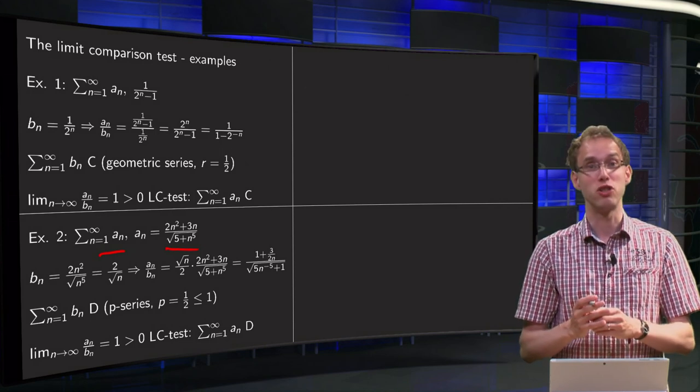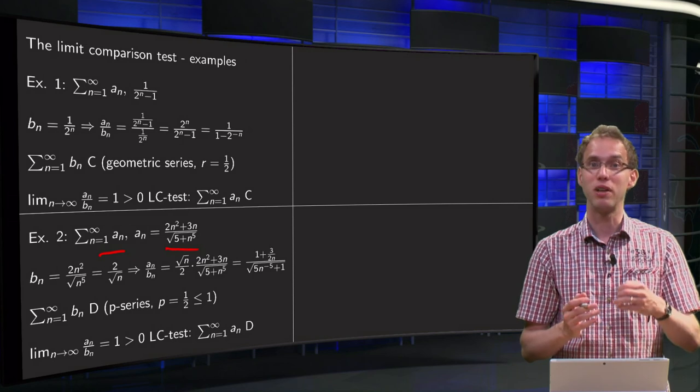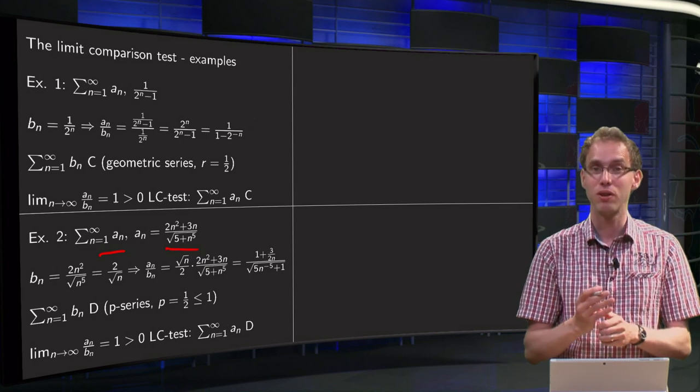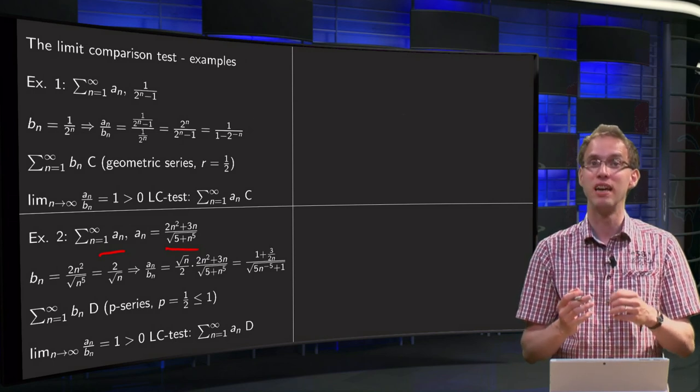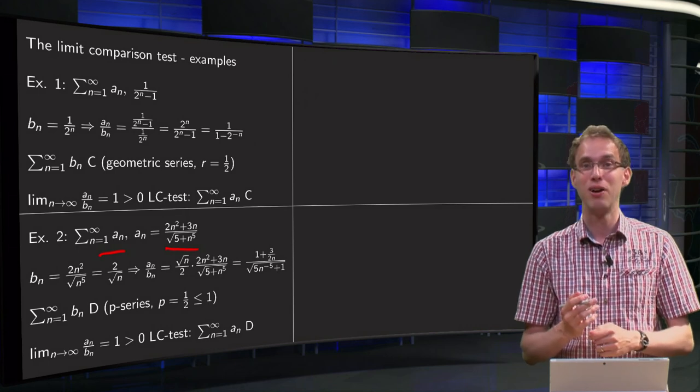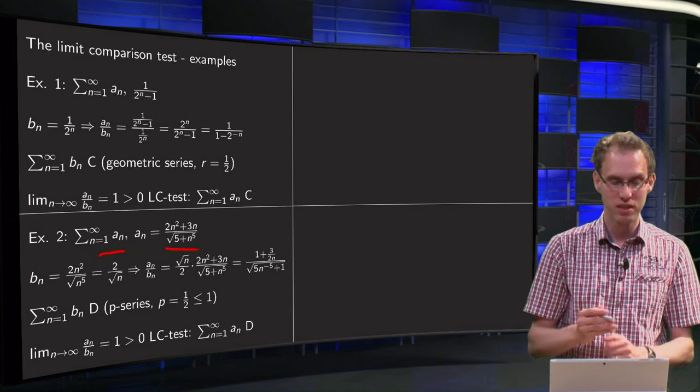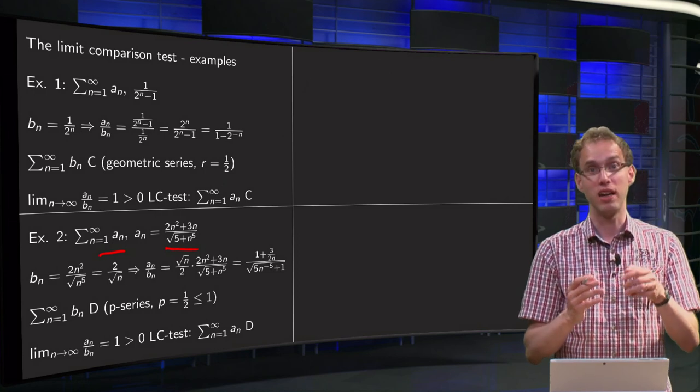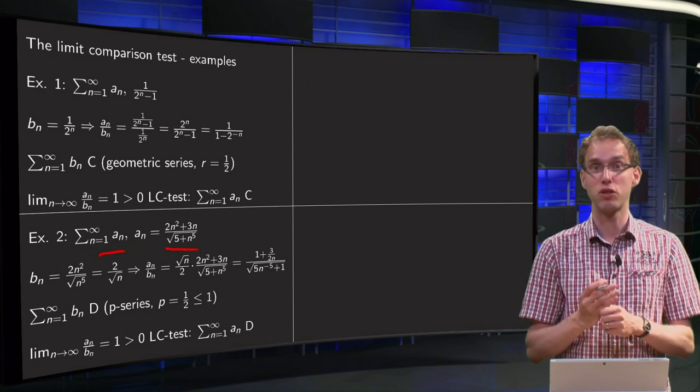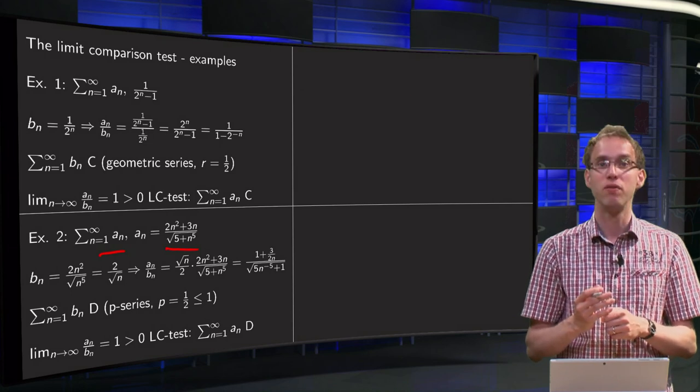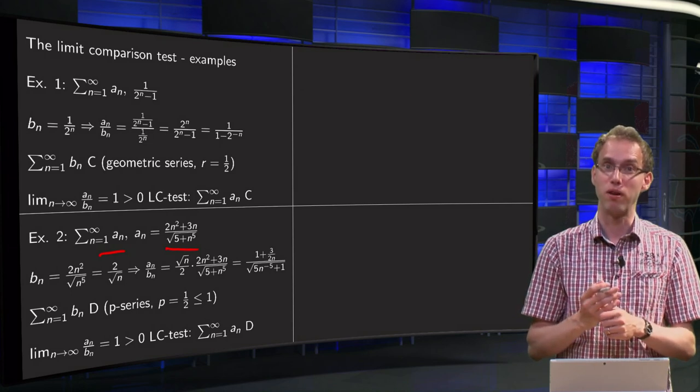Well, if you want to find a suitable comparison series, you can often look what happens with the terms when they go to infinity. That will give you an idea of a suitable comparison series. So what happens if n goes to infinity? The 2n squared plus 3n will behave like 2 times n squared, and the square root will behave as the square root of n to the power 5.